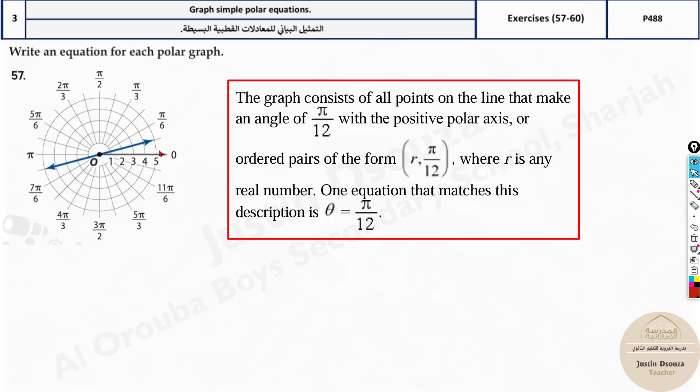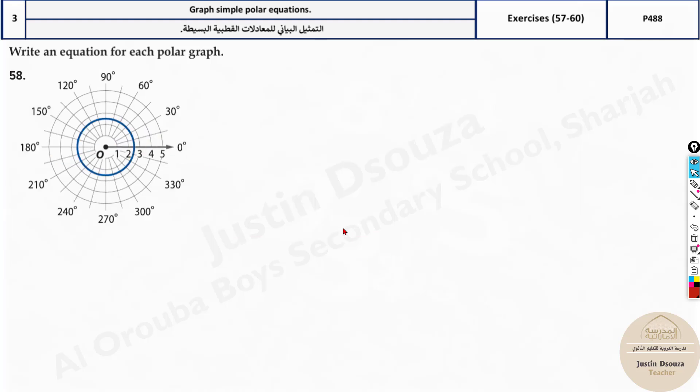There will be four options. Look at which one is depicting this particular point. From the axis, the closest angle is pi by 12.